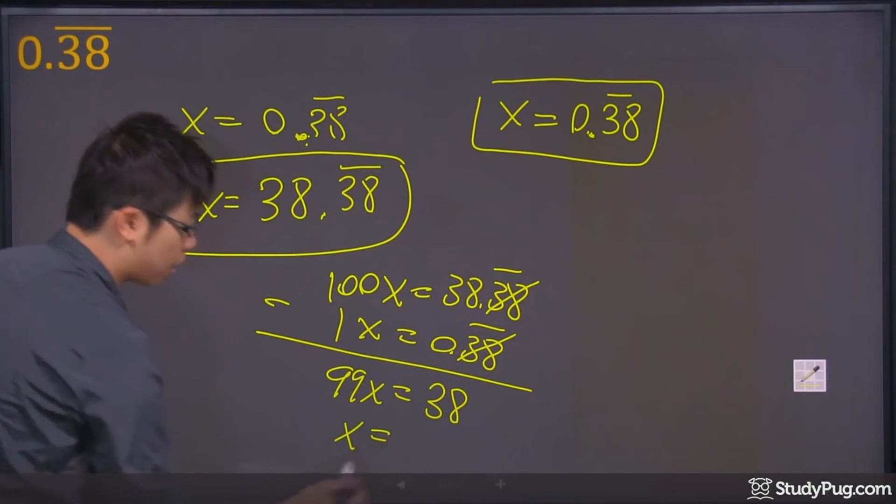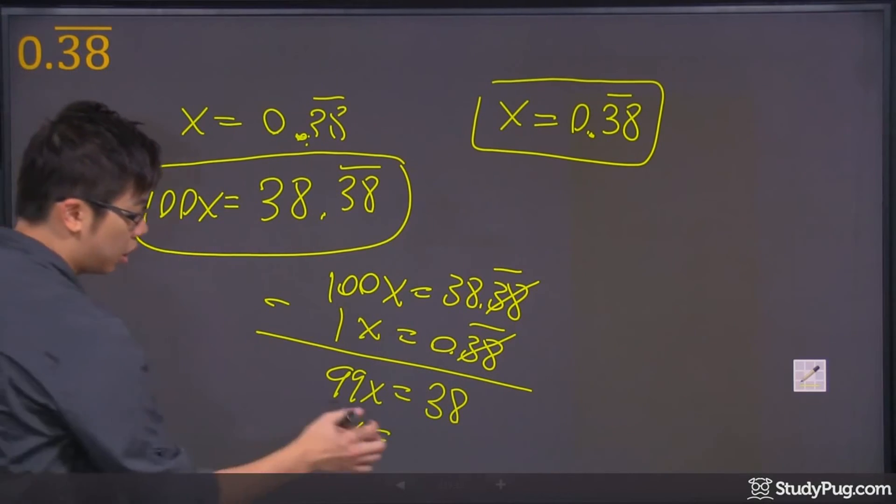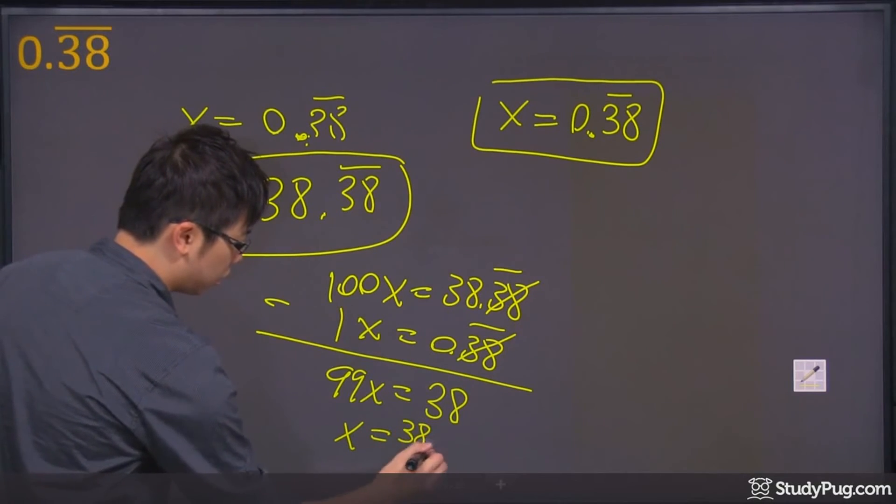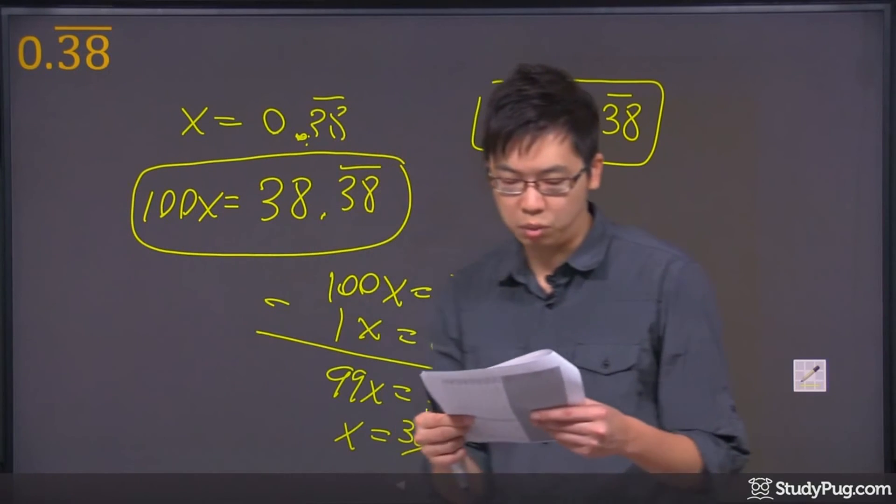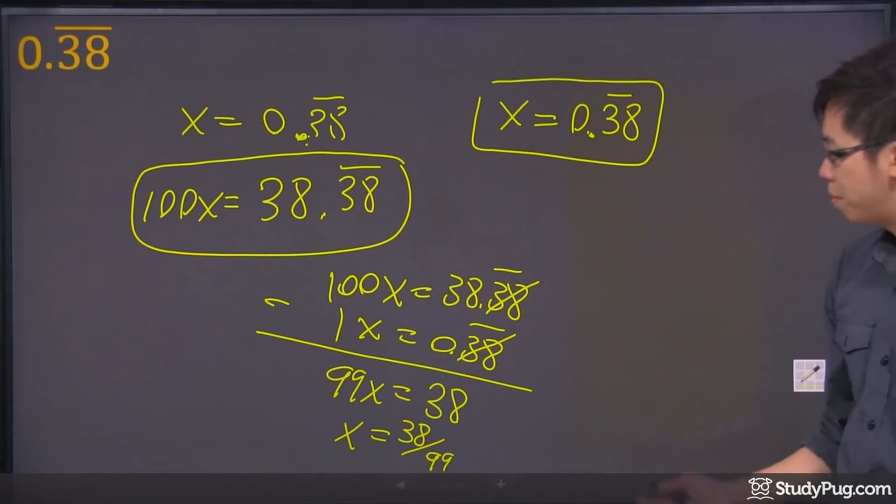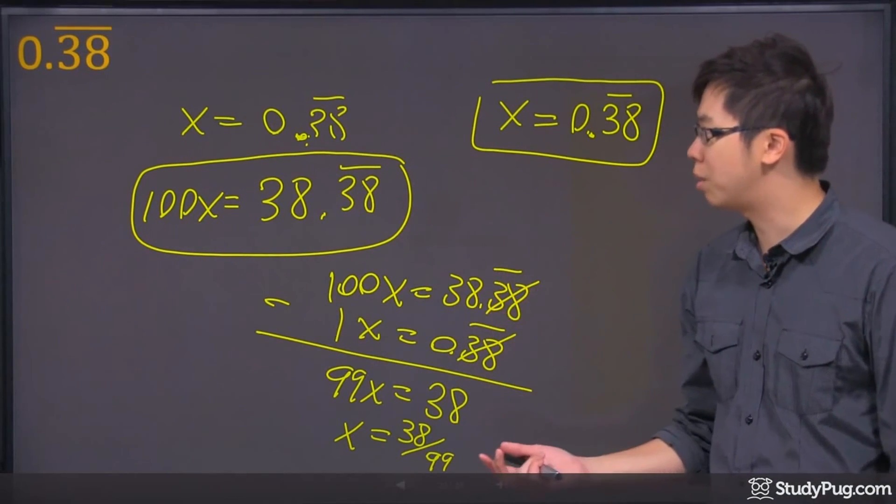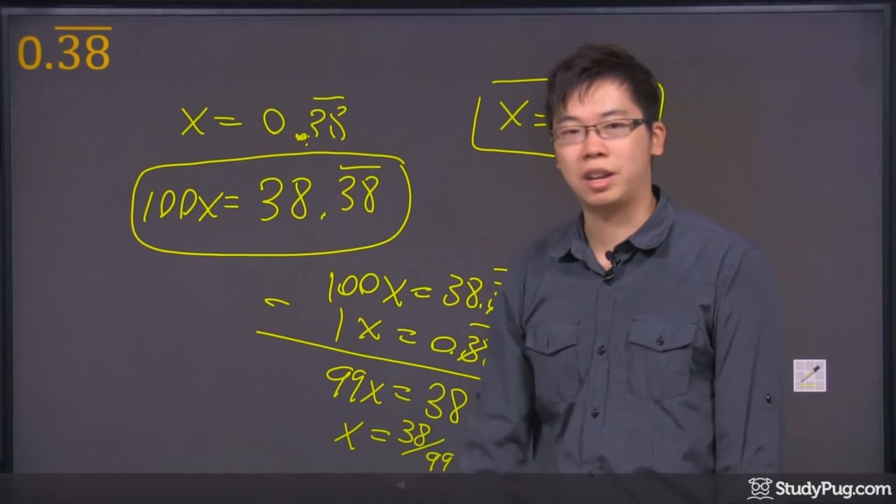So the answer you're going to get, which is the fraction that you're looking for, is just the 38 divided by the 99. And that is the final answer you're supposed to get. Punch in the calculator, magically, you're going to get the decimal answer that looks just like that.